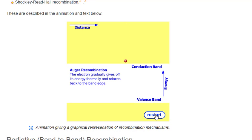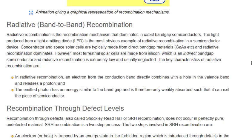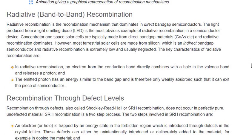Concentrator and space solar cells are typically made from direct bandgap materials such as gallium arsenide, where radiative recombination dominates. However, most terrestrial solar cells are made from silicon, which is an indirect bandgap semiconductor, and radiative recombination is extremely low and usually neglected. In radiative recombination, an electron from the conduction band directly combines with a hole in the valence band and releases a photon.